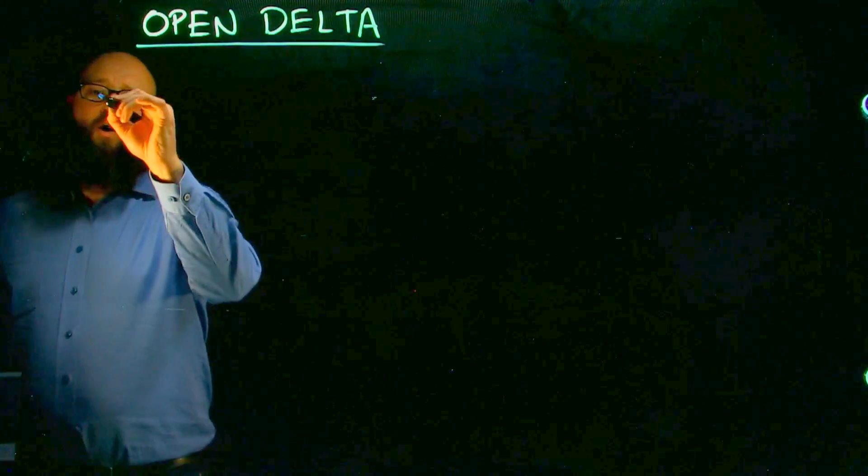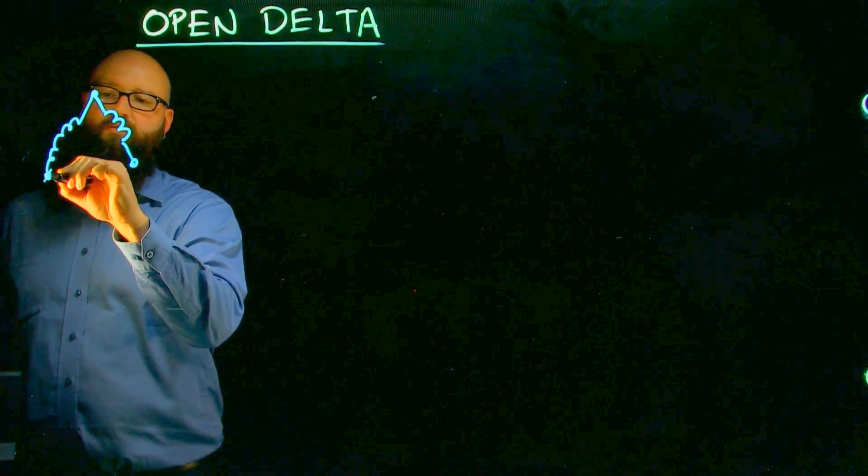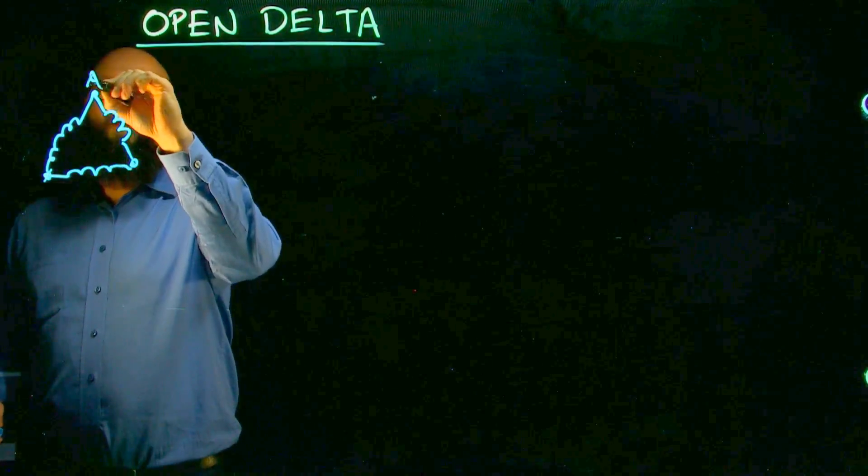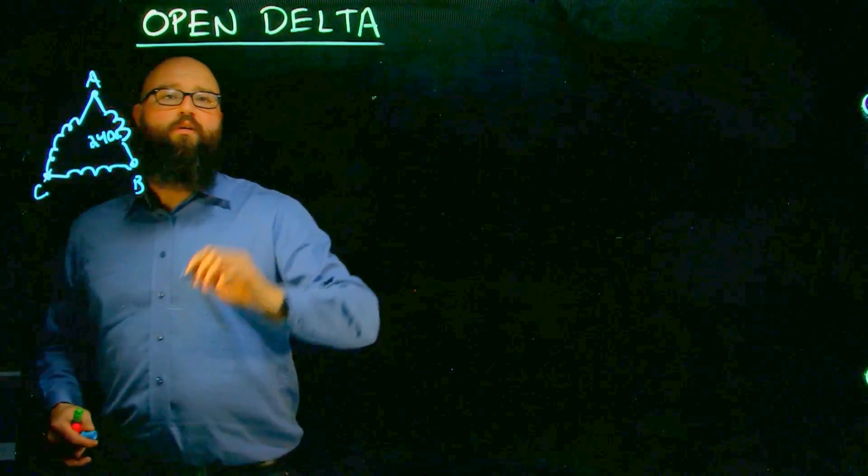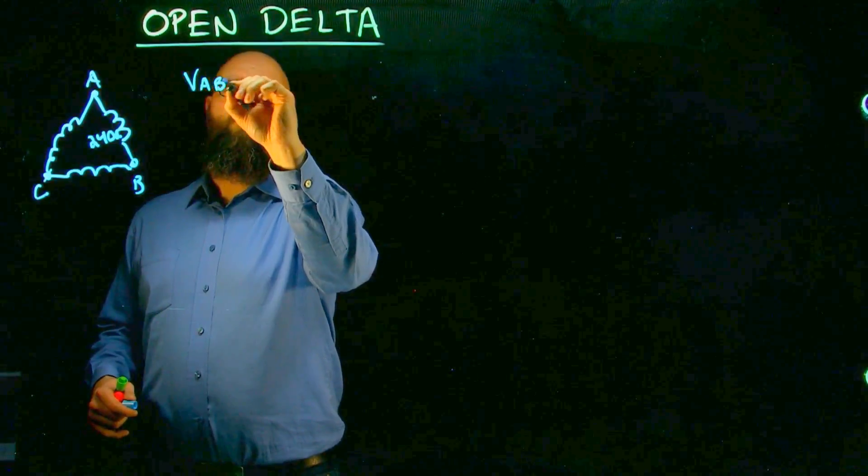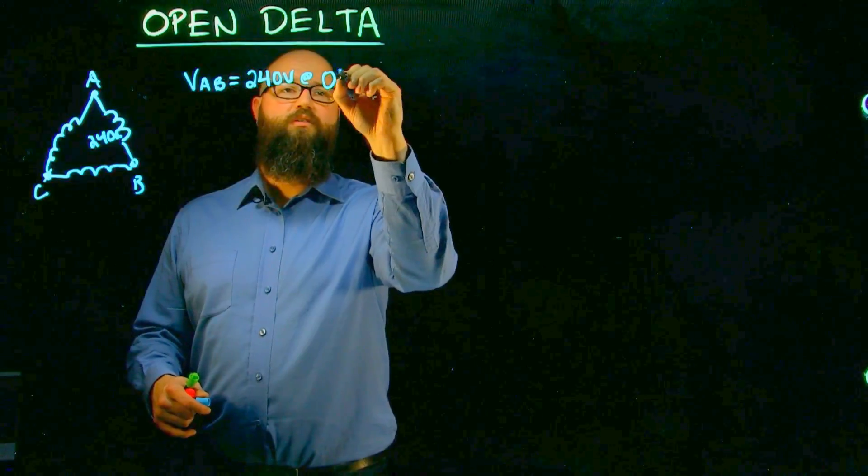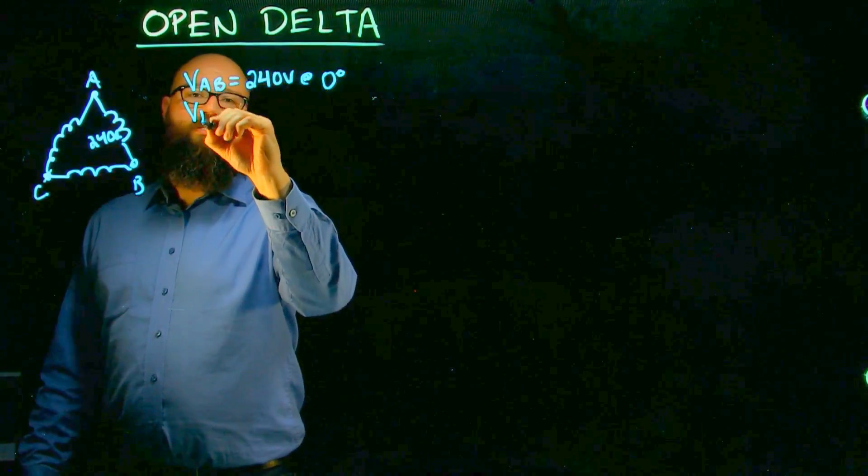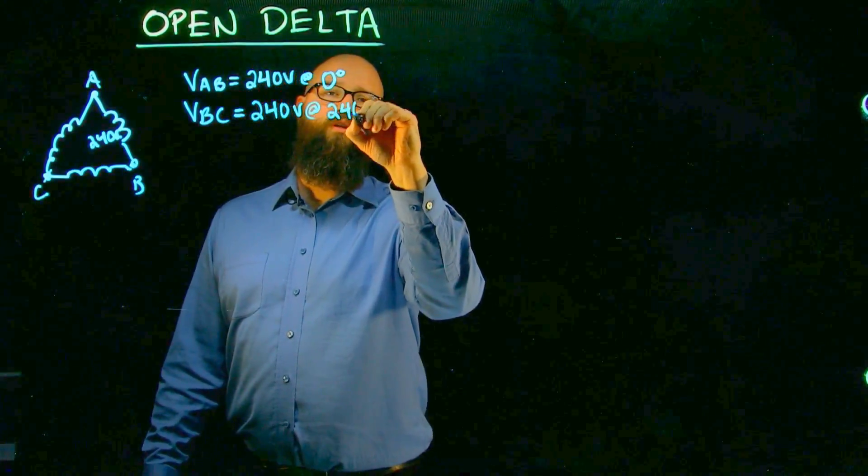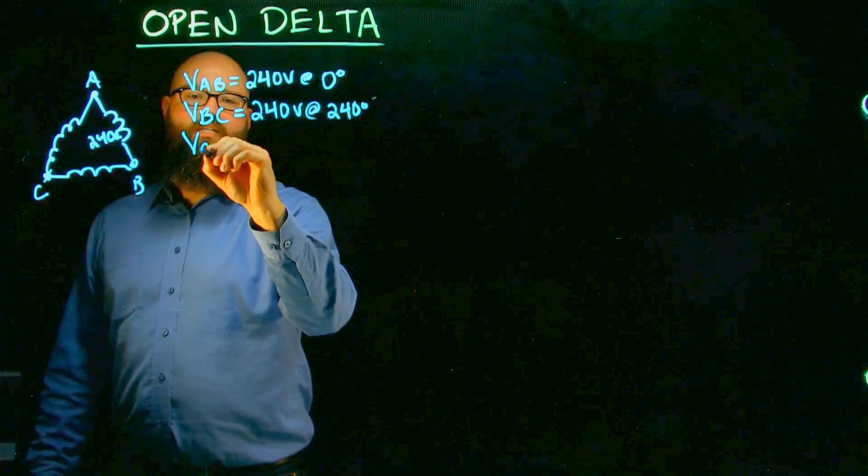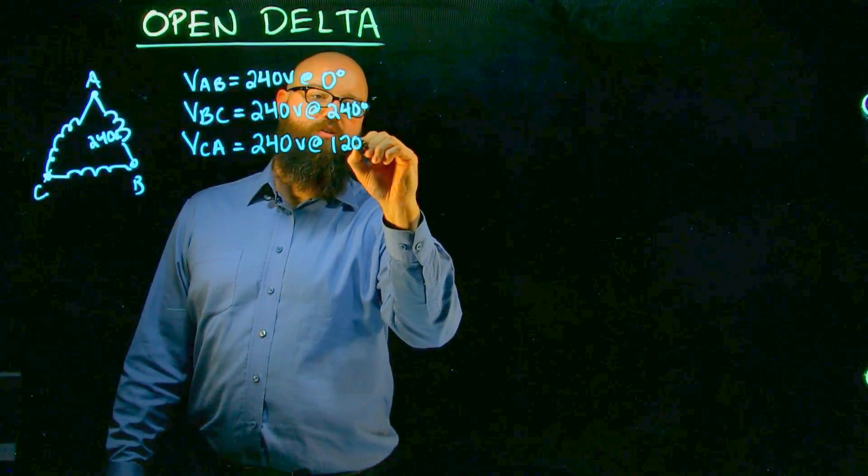We're going to start with our delta transformer, A, B, C. If we're talking about a 240 volt system, we know that V A to B is 240 volts. We're going to use it as our reference at 0 degrees, and we know that V B to C is also 240 volts at 240 degrees, and we have V C to A, which is 240 volts at 120 degrees.